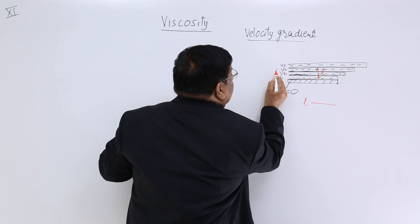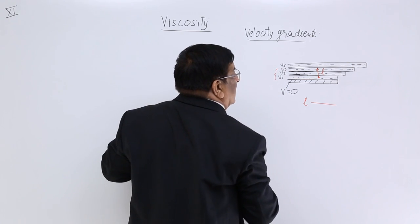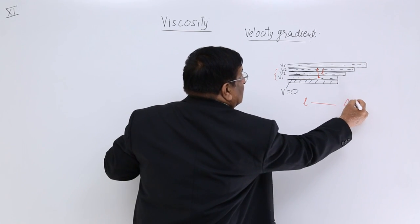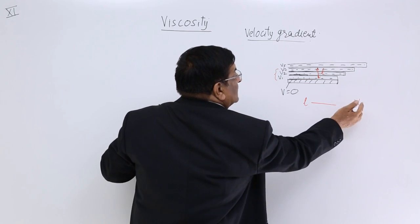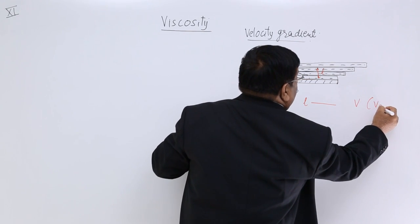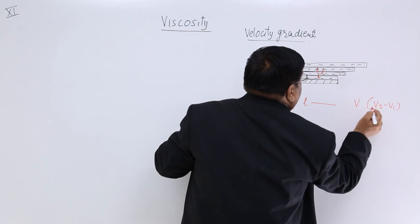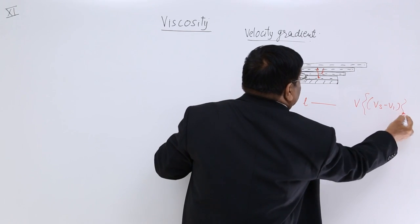This is the increase. Let us say this increase is delta V, or simply V. What is V? This is V3 minus V1.